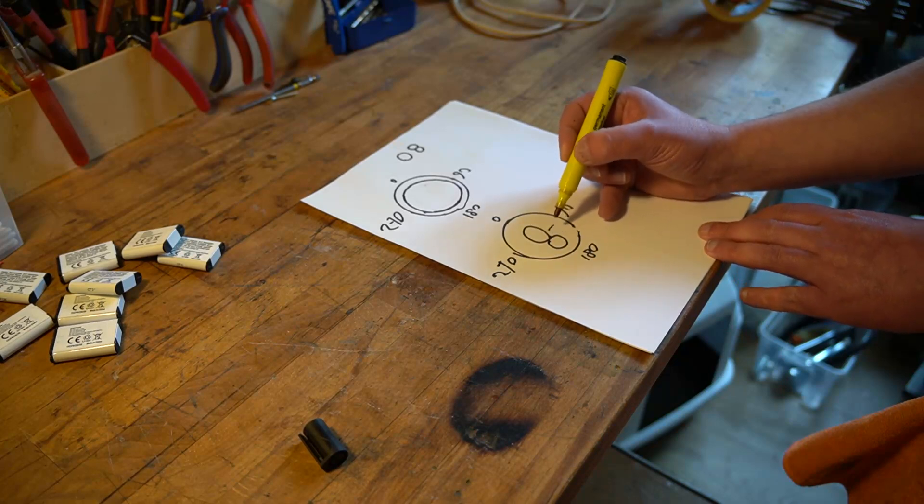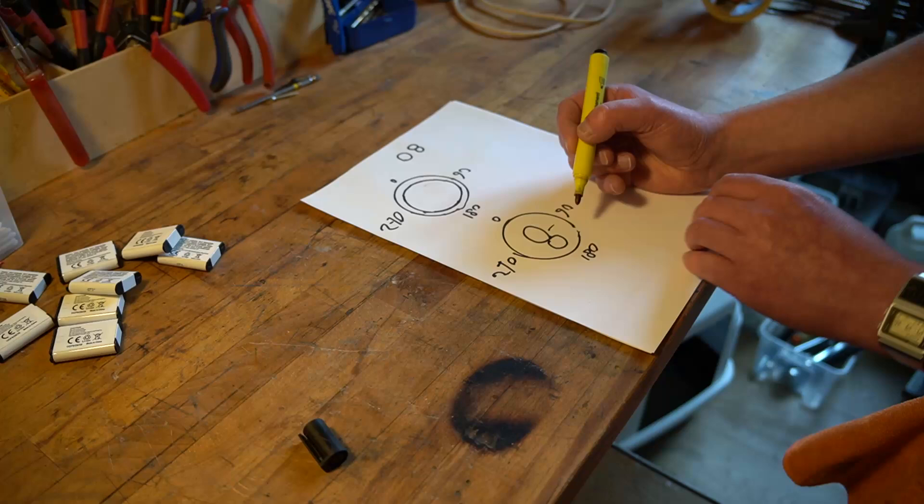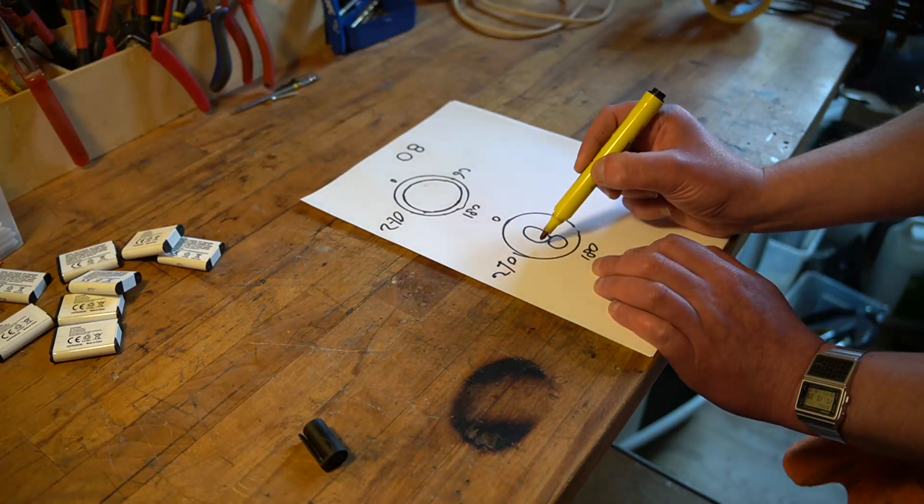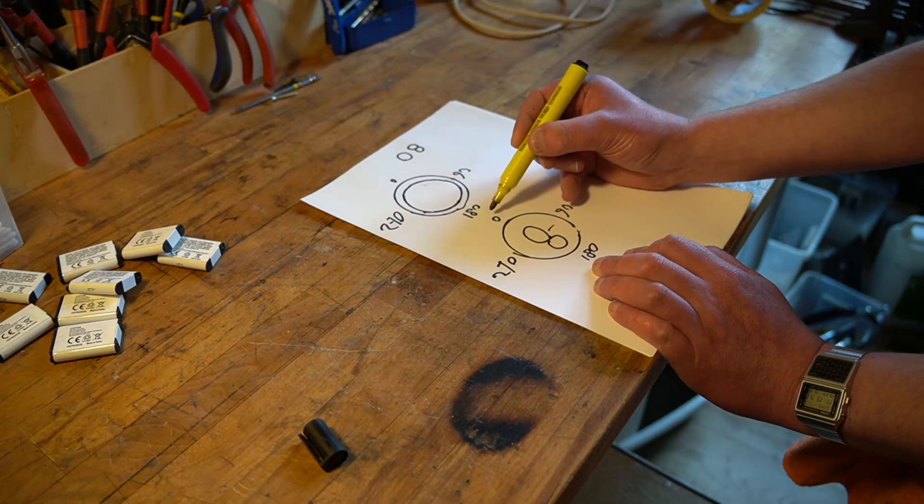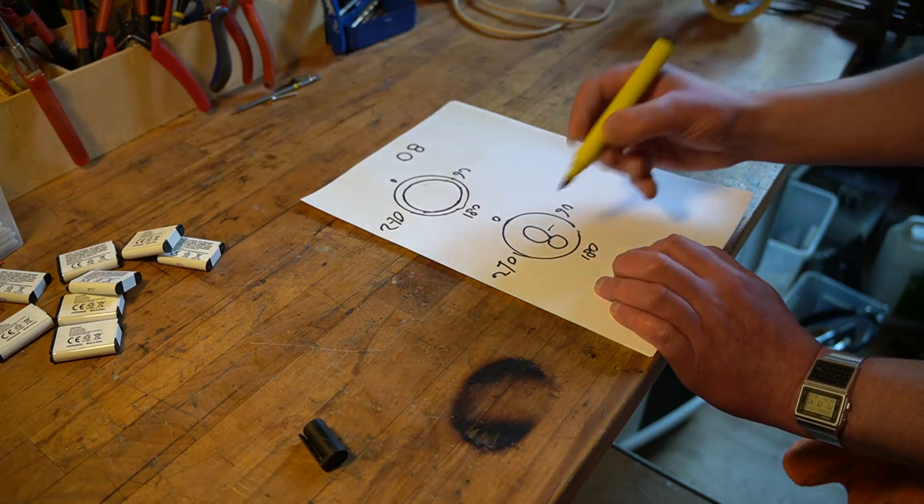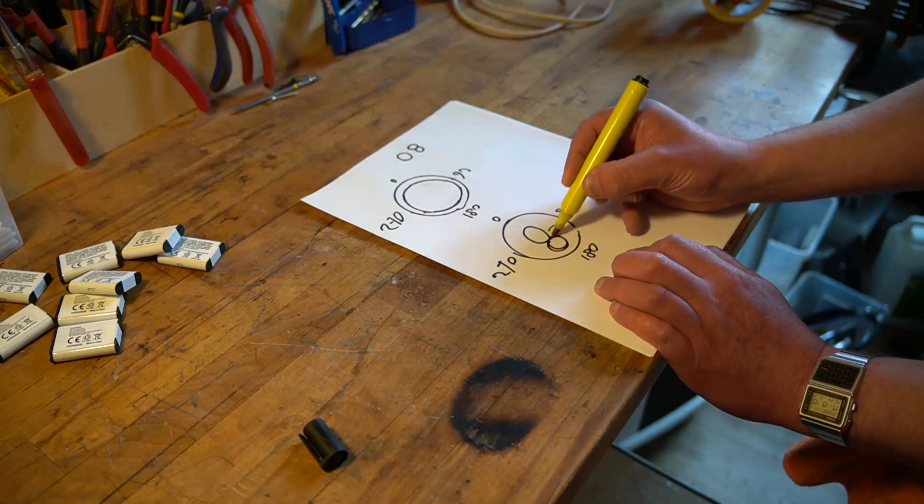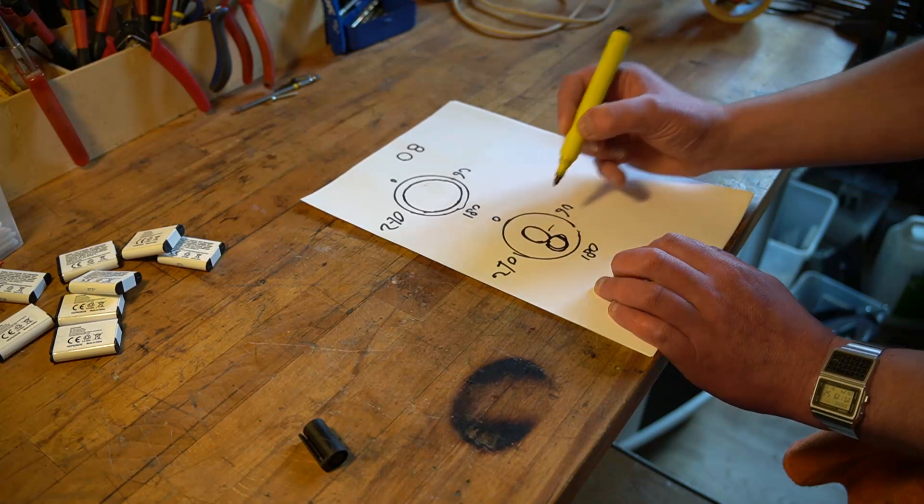So it doesn't pick it up or at least not much at all. Same goes for 270 degree. But it will on the zero degree and 180 degree. Except that at 180, it's out of phase. So this lobe picks up sound, but it's out of phase compared to this lobe.